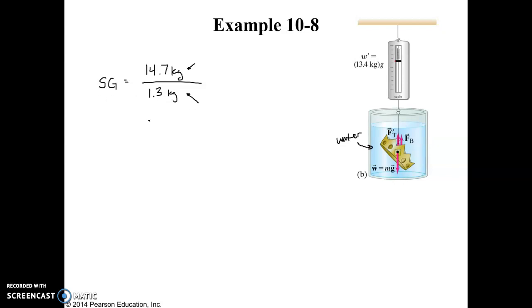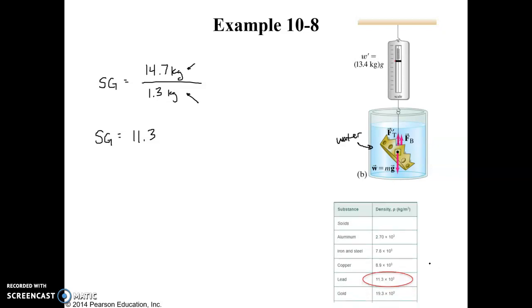And so 14.7 divided by 1.3 gives us a specific gravity of 11.3. Now, what has a specific gravity of 11.3? Well, unfortunately, it's not gold. It turns out that 11.3 is the specific gravity of lead. So in this particular example, it looks like the king was cheated, and the crown, in fact, is not made of gold, but instead is made of lead.